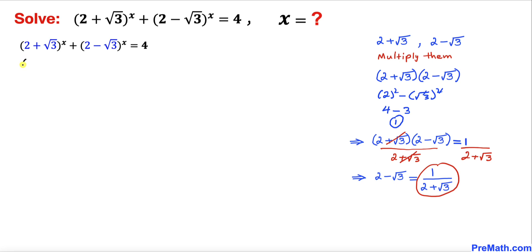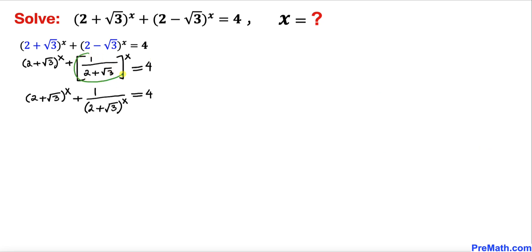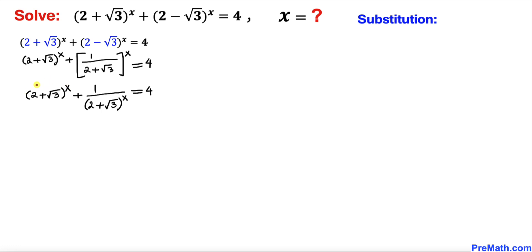Reverting to the original equation, wherever we see (2 minus square root of 3) we replace it with 1 divided by (2 plus square root of 3). So the equation becomes (2 plus square root of 3) to the power x plus 1 divided by (2 plus square root of 3) to the power x equals 4. Now let's substitute u equals (2 plus square root of 3) to the power x.